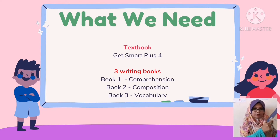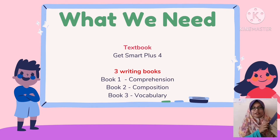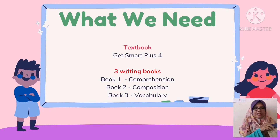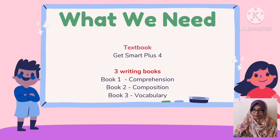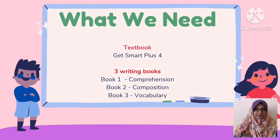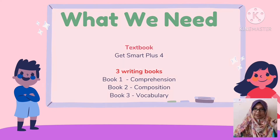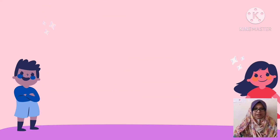Book Two is for composition, and Book Three is for our vocabulary. You can look at the slide: Book One is comprehension, Book Two is composition, and Book Three is vocabulary.